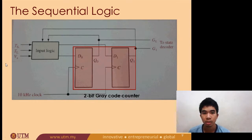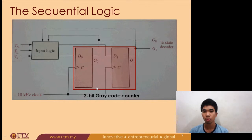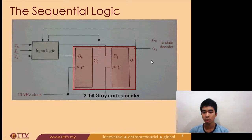Assalamualaikum warahmatullahi wabarakatuh. I will be explaining about the sequential logic circuit, which we can think of as the brain of the system, because it takes all the inputs — the short timer and the long timer from the timing circuit and the vehicle sensor — and processes all the inputs to produce two outputs which will be sent to the decoder. The sequential logic consists of two elements: the two-bit counter and the combinational logic.